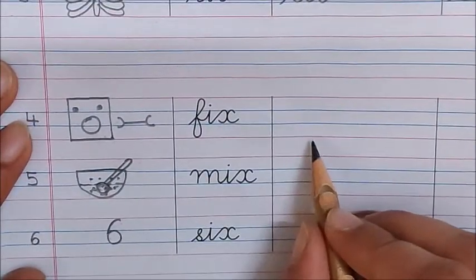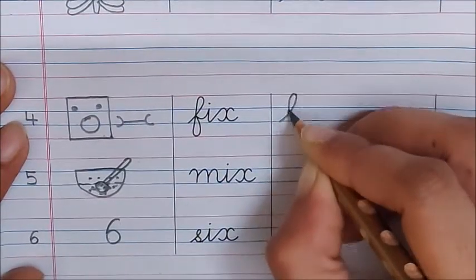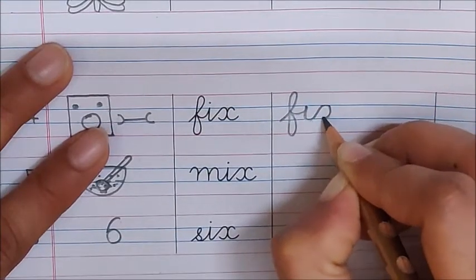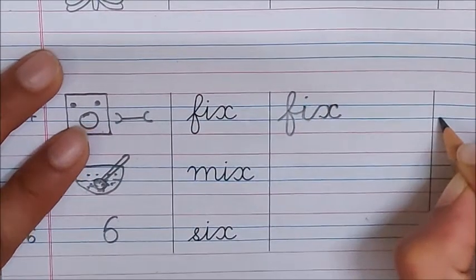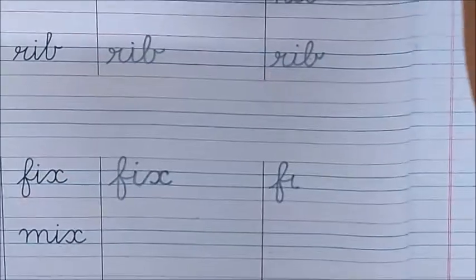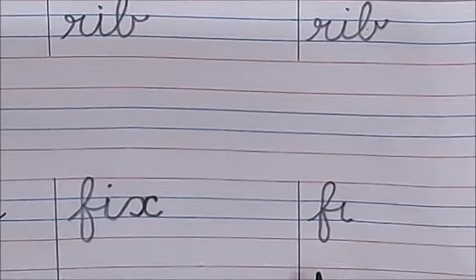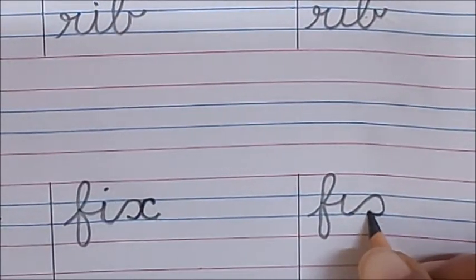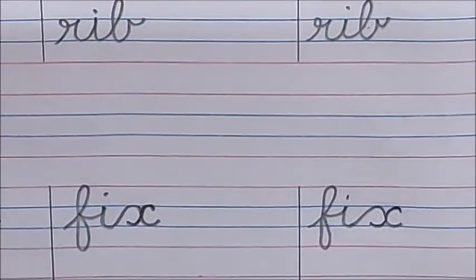Now, let us write these words. Fix. F, i, x. Fix. One more time. F, i. Now, see children, how am I going to write x? Fix. You will go up, down, turn. Now, again go back and see. Fix.